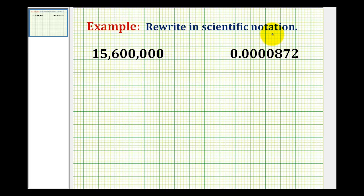In order to write these numbers in scientific notation, they need to be in the form of A times 10 raised to the power of B, where A, called the significant or mantissa, is greater than or equal to 1 and less than 10.